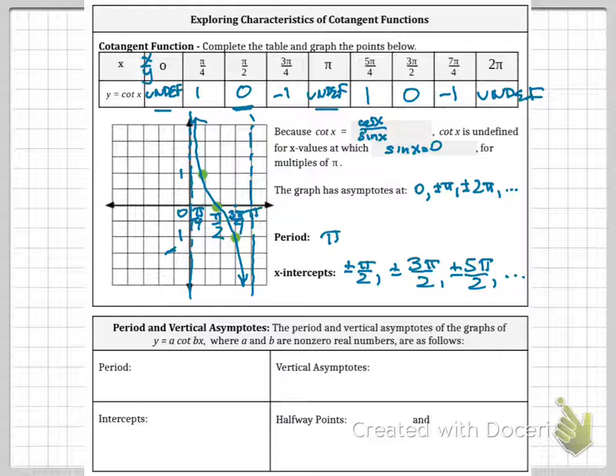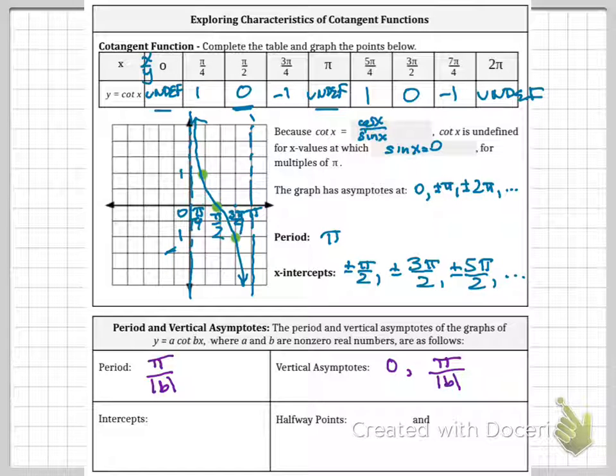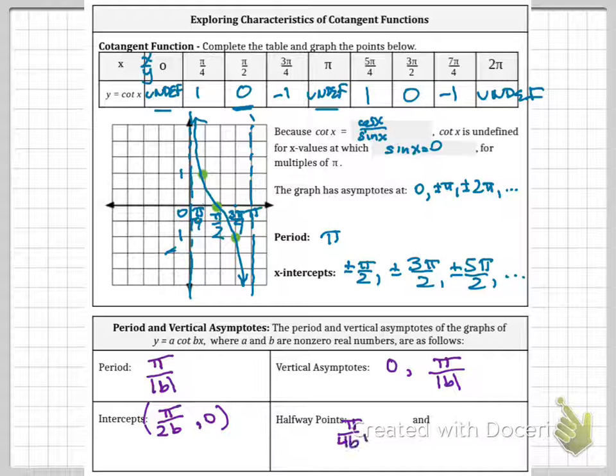So let's take a look at the period and vertical asymptotes of this graph. We know that the period is going to be π over absolute value of b. The vertical asymptote will have it at 0, and it'll also be at π over absolute value of b. So it's the same. Our intercept will be at π over 2b, comma 0. That's our x-intercept. Our halfway point will be π over 4b, a. And then the other one is at 3π over 4b and negative a.